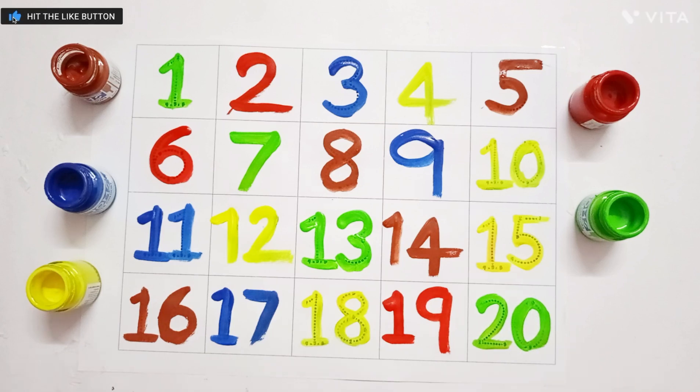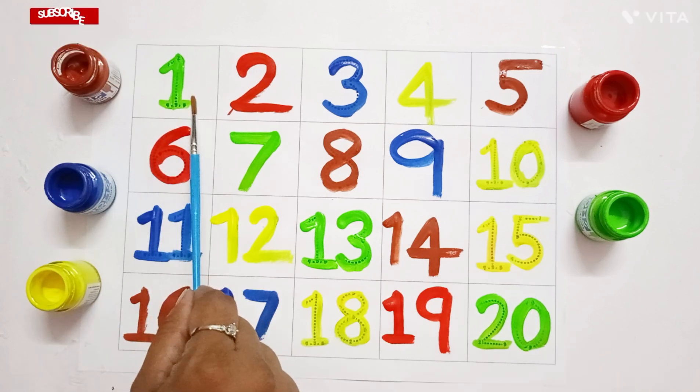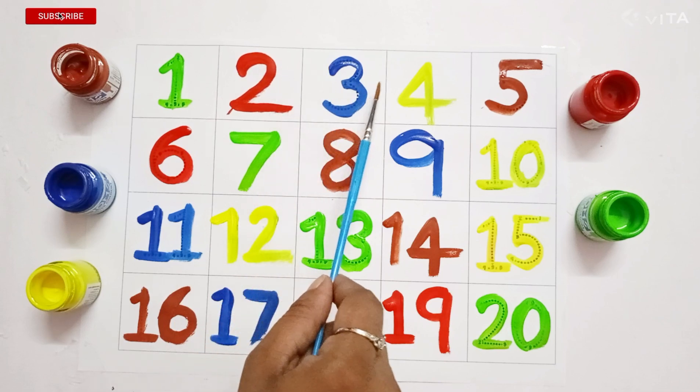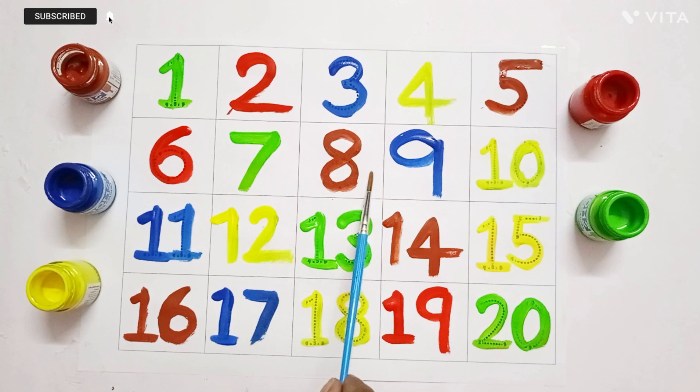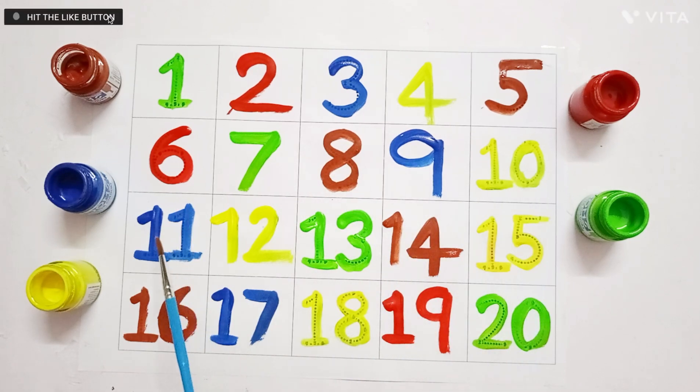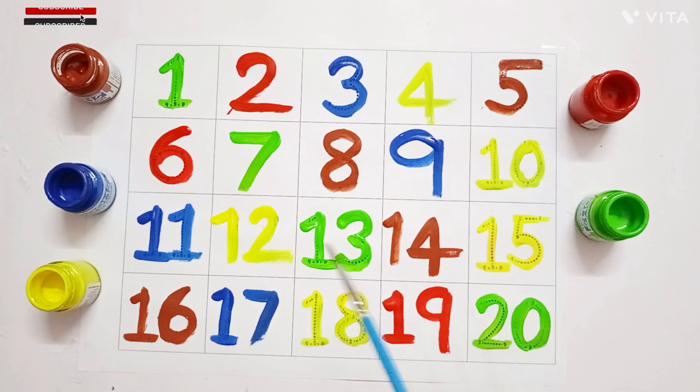Once again we repeat the numbers 1, 2, 3, 4, 5, 6, 7, 8, 9, 10, 11, 12, 13, 14, 15, 16, 17, 18, 19 and 20.